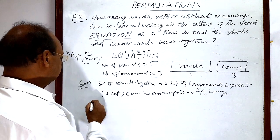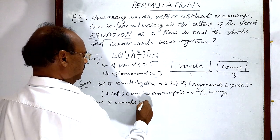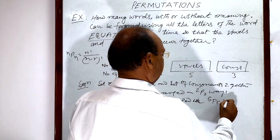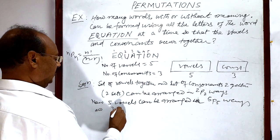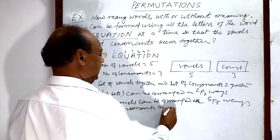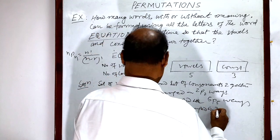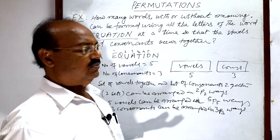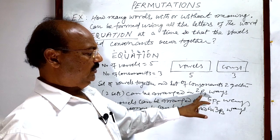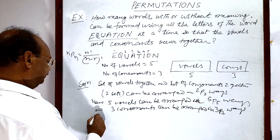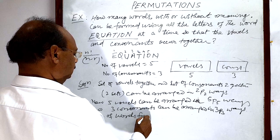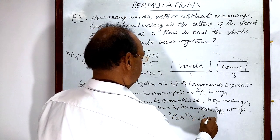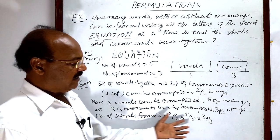Five vowels can be arranged in 5P5, and three consonants can be arranged in 3P3. Therefore, the total number of arrangements — that is, the total number of words formed — will be the multiplication of 2P2 × 5P5 × 3P3. So the number of words with or without meaning formed will be 2P2 into 5P5 into 3P3. This is the total number of arrangements and after calculating it we will get the answer.